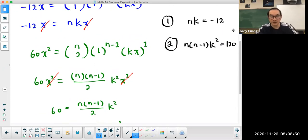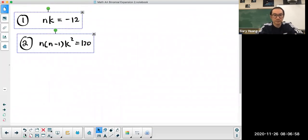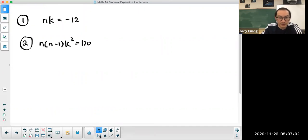Okay, so what's left is I need to solve these two equations into the unknowns. How am I going to do that? I'm going to isolate the first equation. And I'm going to let k be negative 12 over n.